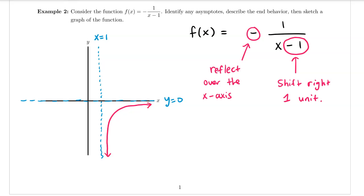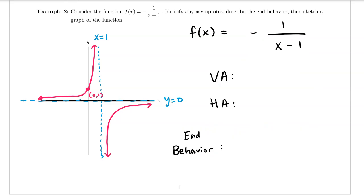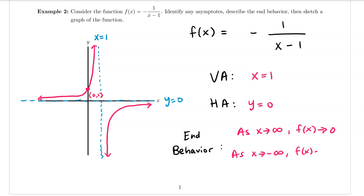Now I'll draw the graph — it reflected over the x-axis so it looks like this. I can solve for the y-intercept by plugging in zero: negative one over negative one equals one, so our y-intercept is zero comma one. Our vertical asymptote is the vertical line x equals one, our horizontal asymptote is the line y equals zero, and our end behavior is: as x approaches infinity f of x approaches zero, and as x approaches negative infinity f of x also approaches zero.